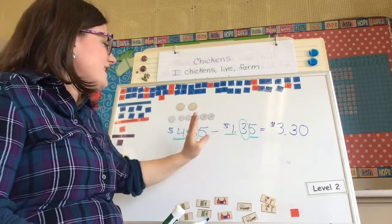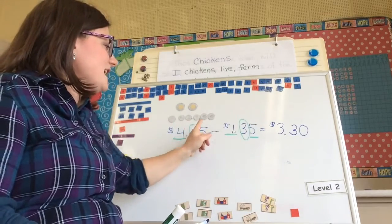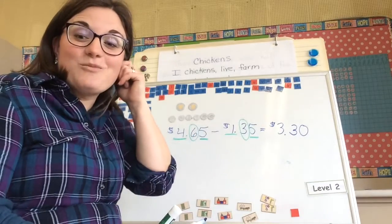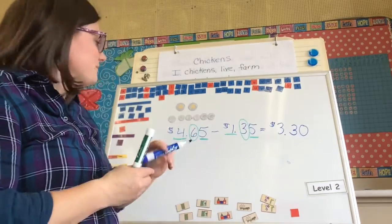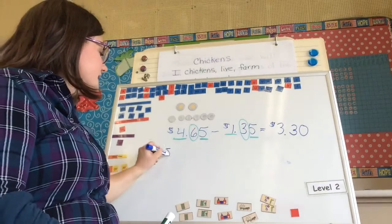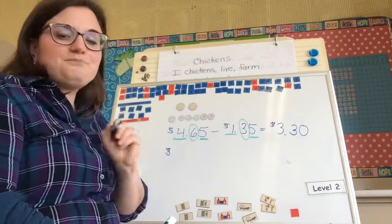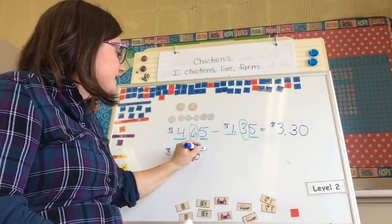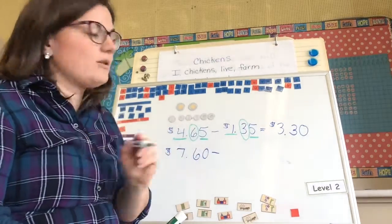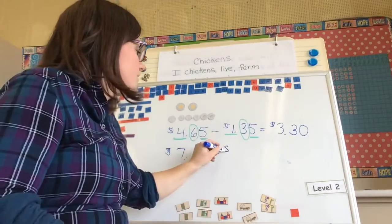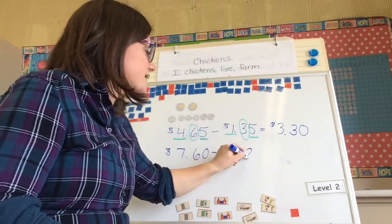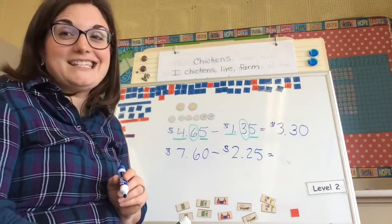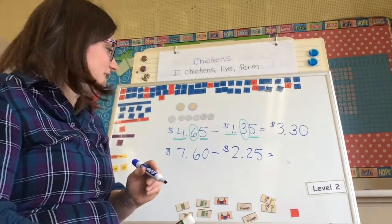Start with my dollars, then my tens, then my ones — just like we have been doing. Let's do this next one here, where I have $7.60 and I want to take away $2.25. I love spending that money, so let's see how much I would have left.